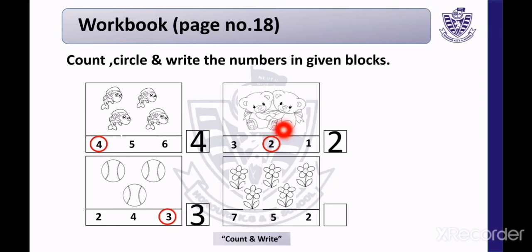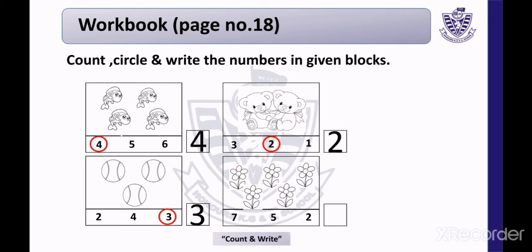This is the last box. This is a picture of flowers. Count with me — 1, 2, 3, 4, and 5. There are 5 flowers. Look at the first number — is it 5? No. Next — is it 5? Yes. Circle this number and write it in the given block.